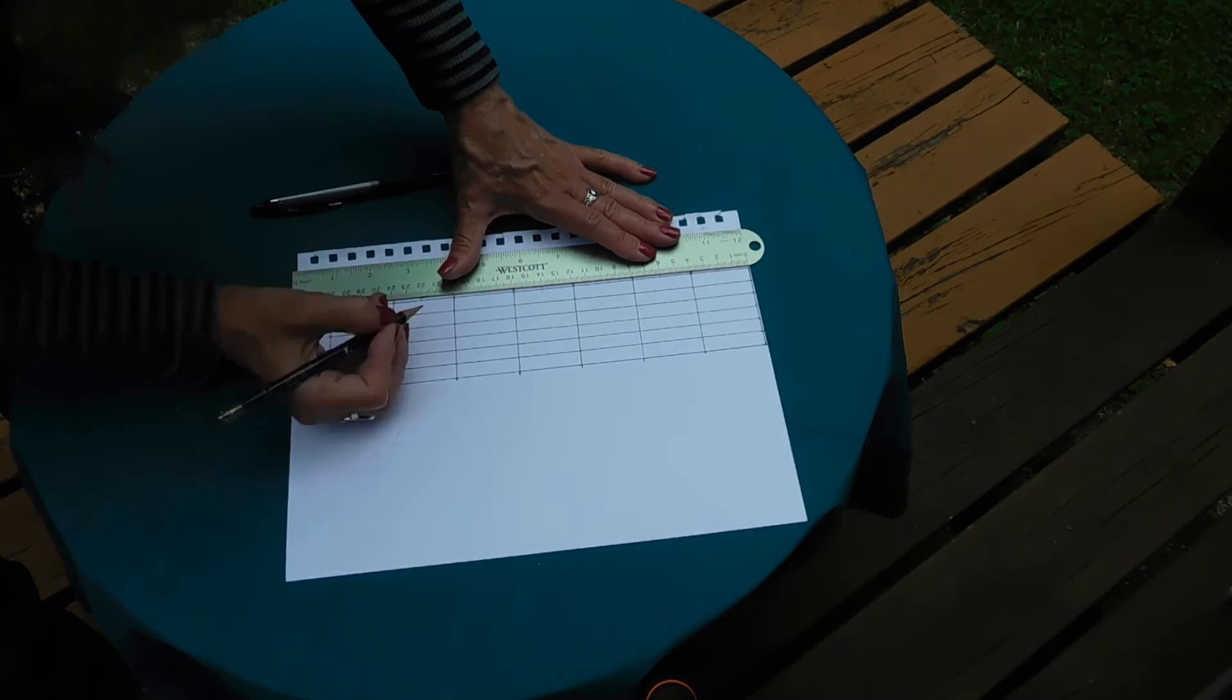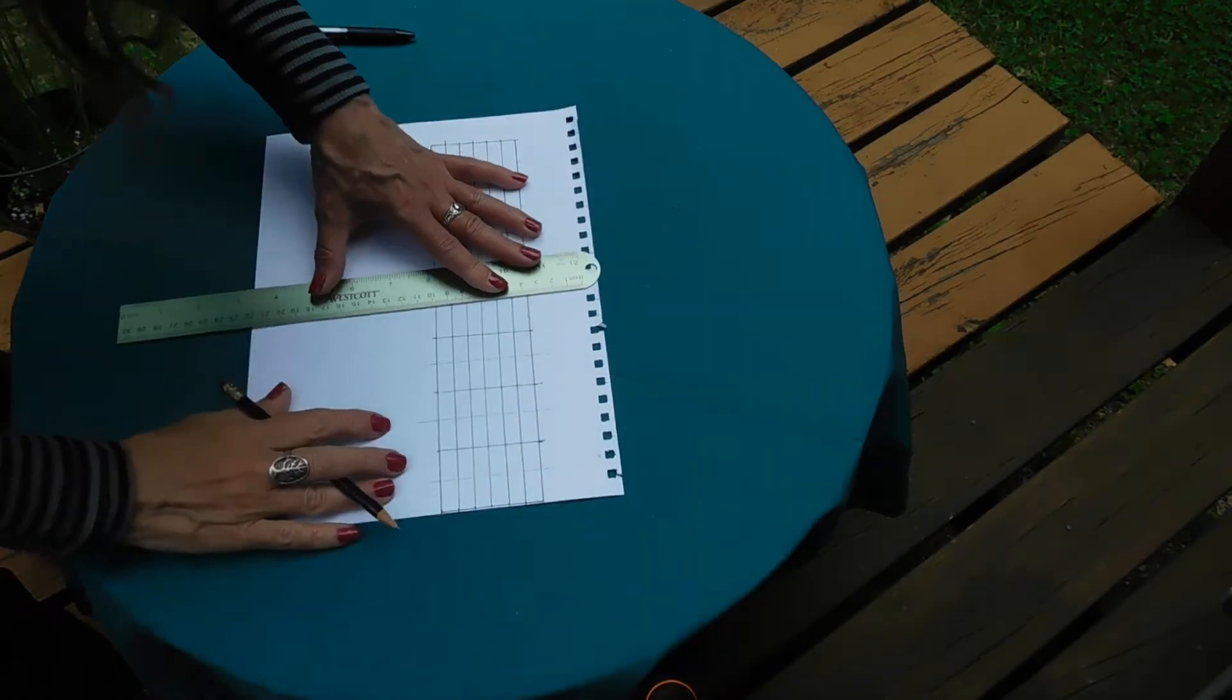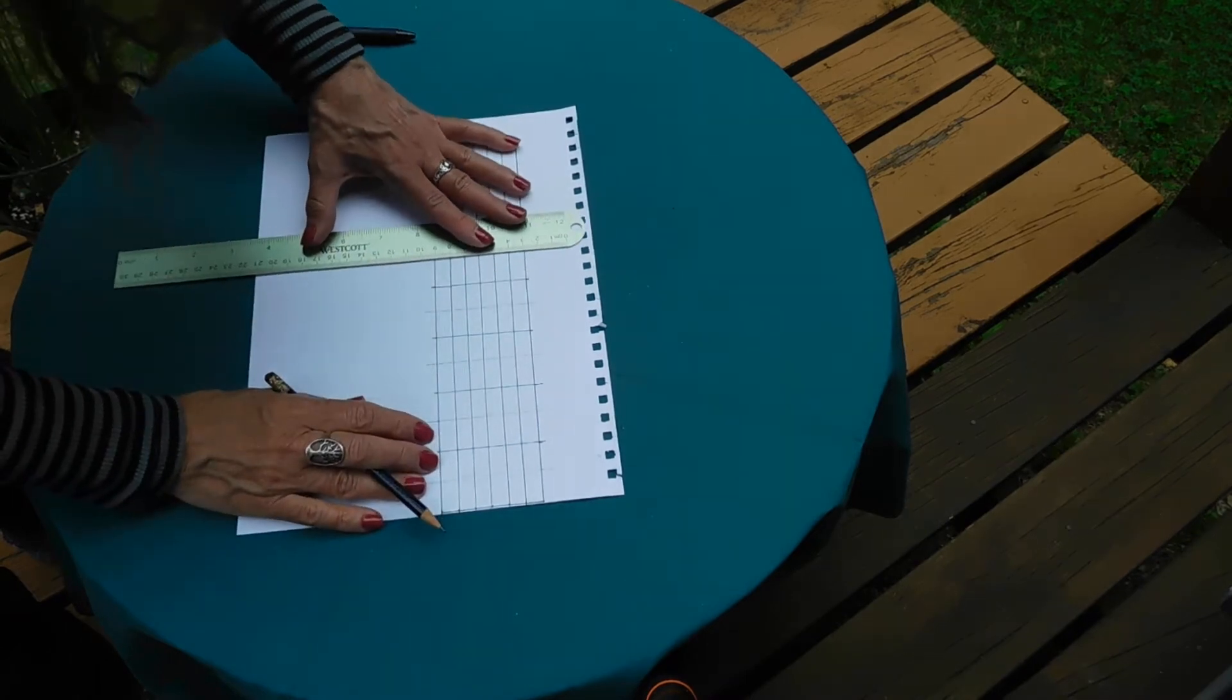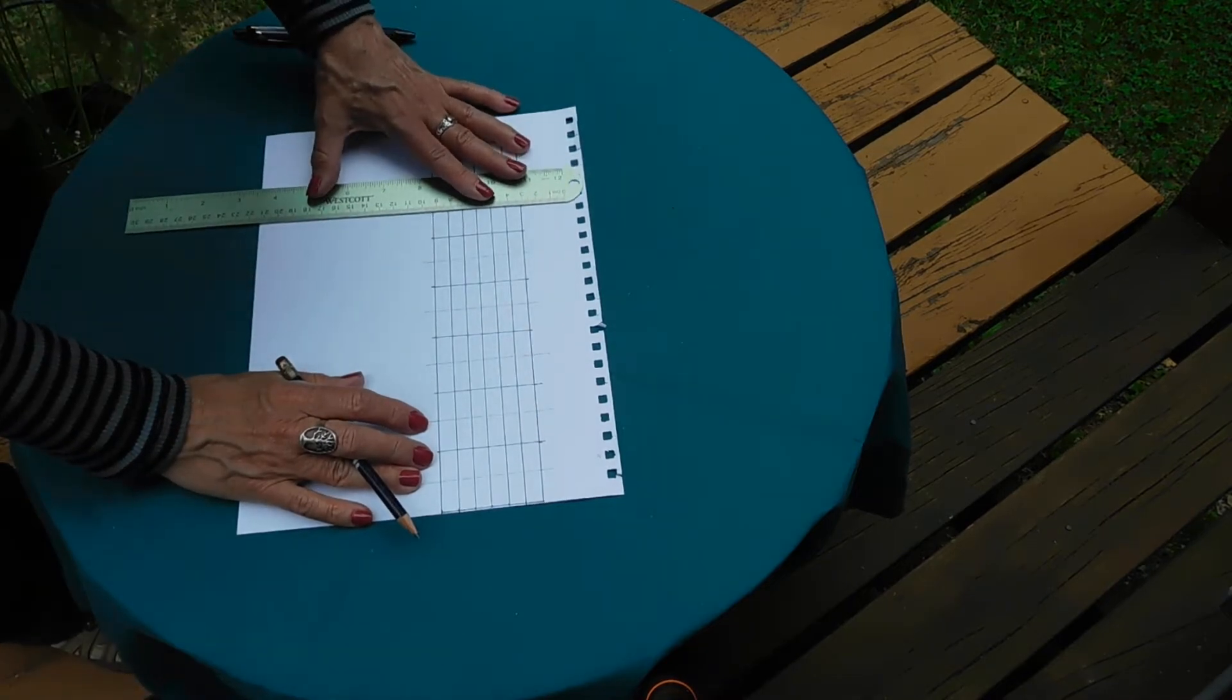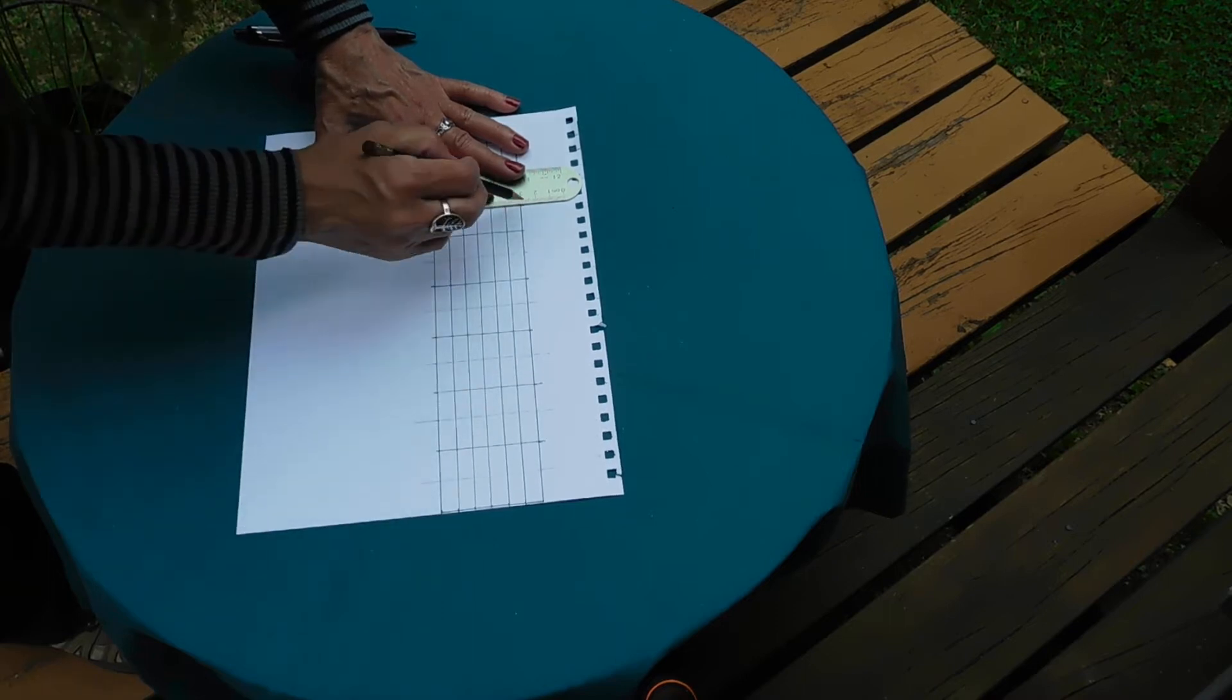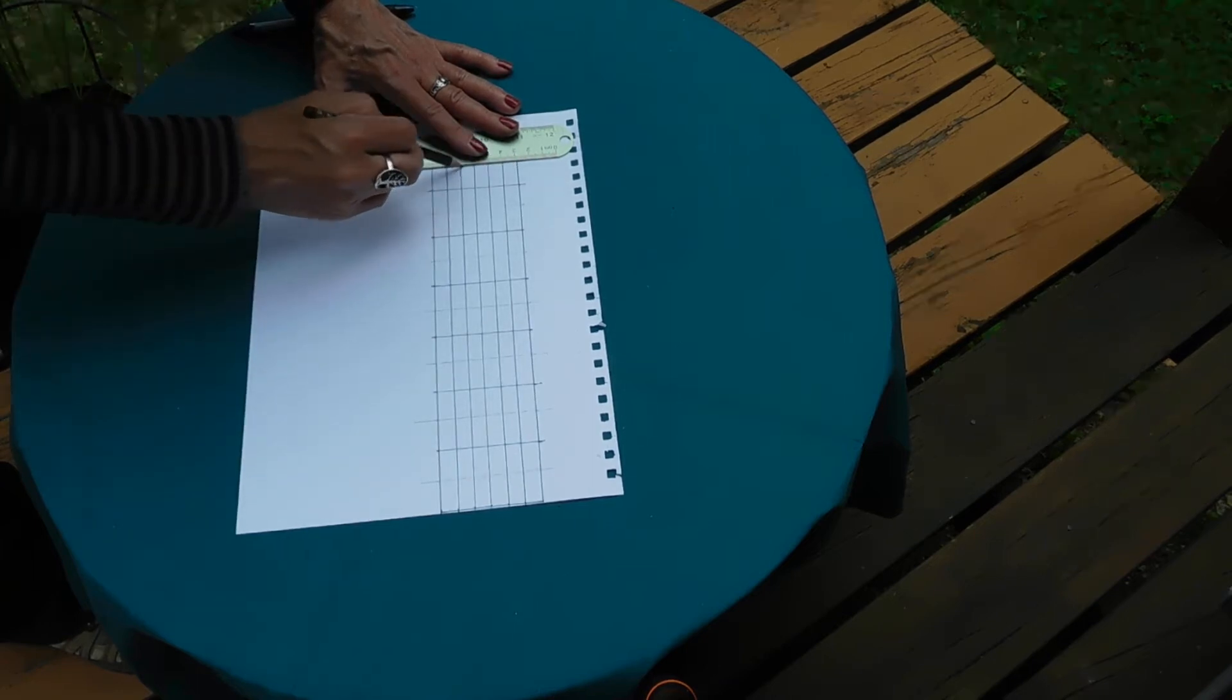22, and 26. And we're going to do that on both of the long edges. So the pen marks are going to be a cutting and coloring in guide and the pencil marks are just going to be a coloring in guide.